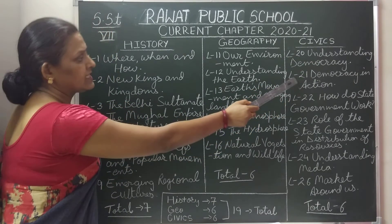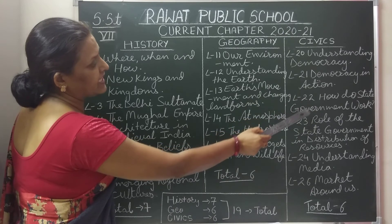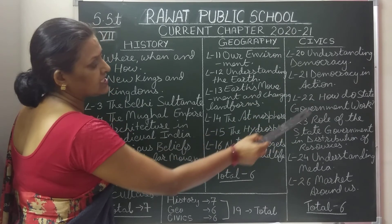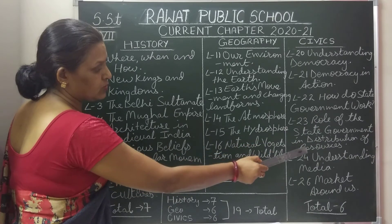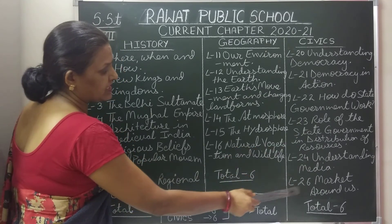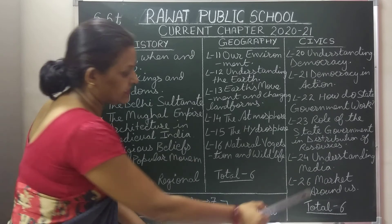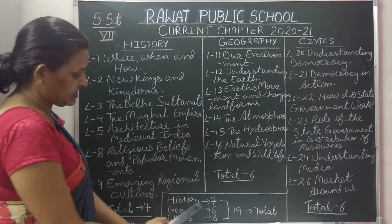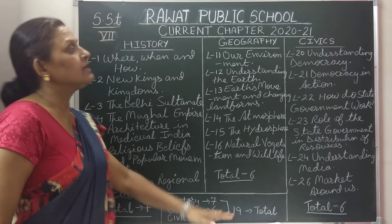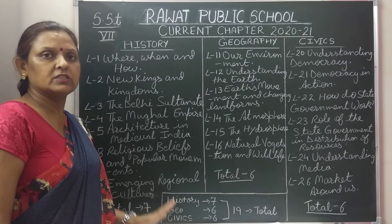In civics, lesson number 20: Understanding Democracy. Lesson number 21: Democracy in Action. Lesson number 22: How Do State Governments Work. Lesson number 23: Role of the State Government in Distribution of Resources. Lesson number 24: Understanding Media. And lesson number 26: Market Around Us. These 6 chapters we will be studying in civics. So total — history 7, geography 6, and civics 6 — we will be studying 19 chapters in this session in class 7 in social science.